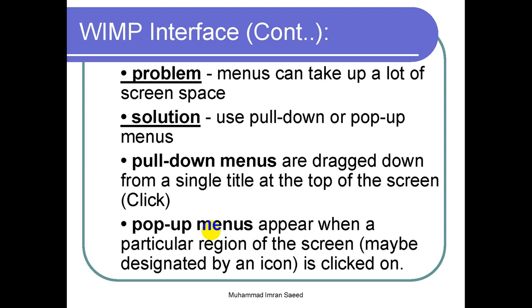For example, on the desktop when you right-click on any icon, you get a pop-up menu that appears with options like cut, copy, paste, properties, and so on. This menu is associated with different icons. In order to save screen space, we put these options in the pop-up menu. Whenever a user needs those options, they right-click or apply the designated action — normally a right-click — and it shows the different options in the pop-up menu.